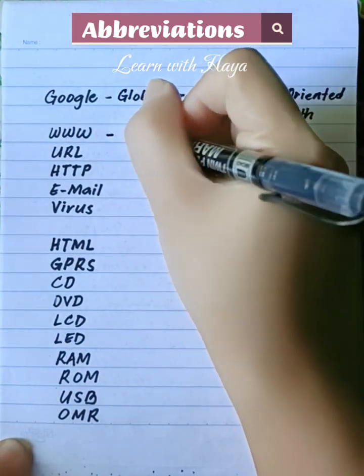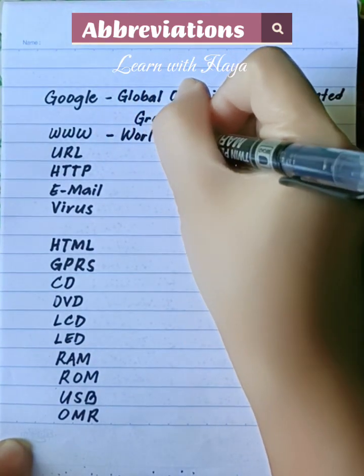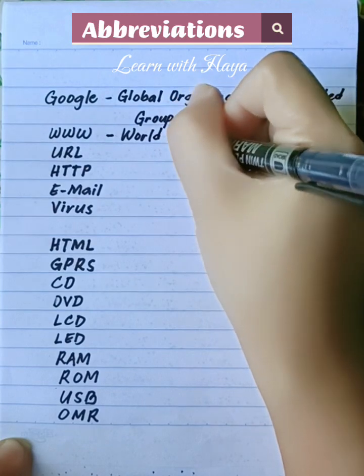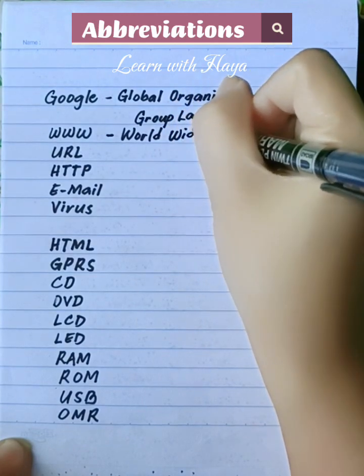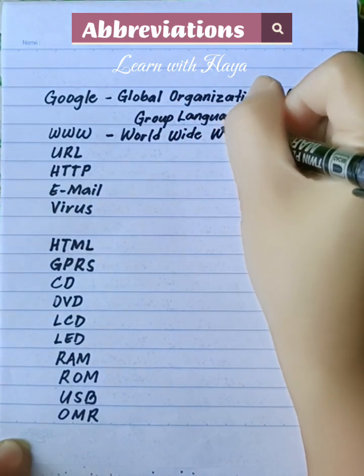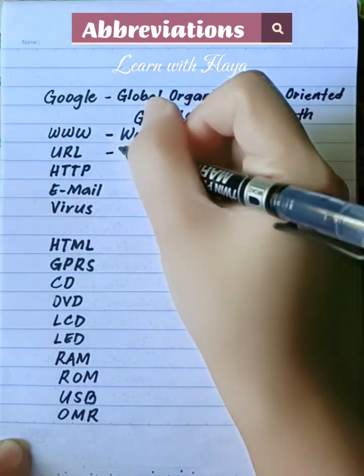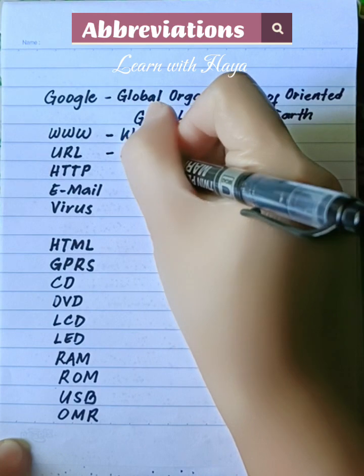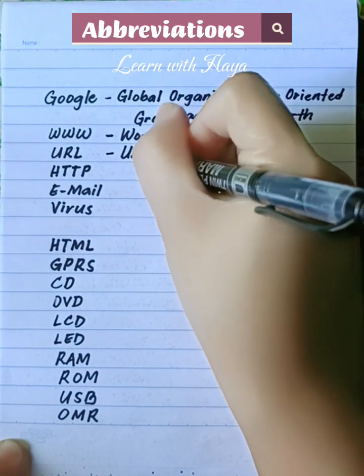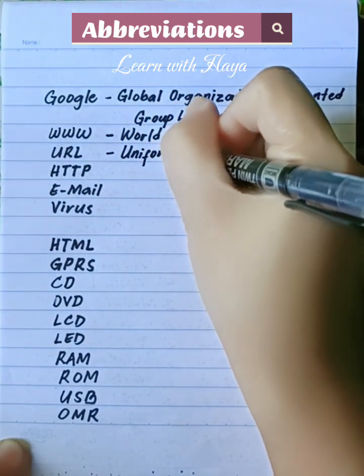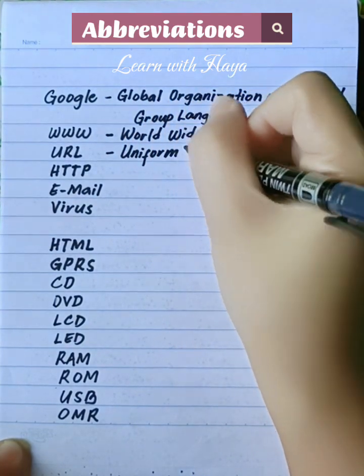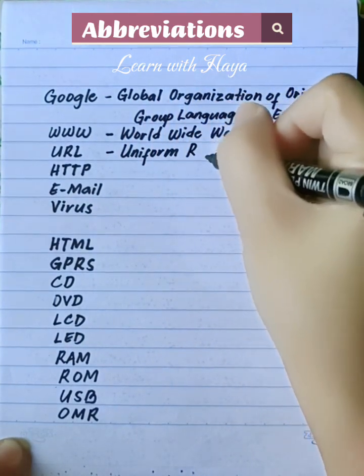WWW: World Wide Web. URL: Uniform Resource Location.